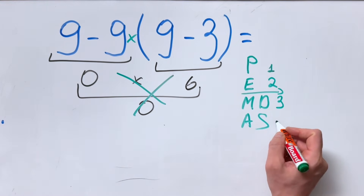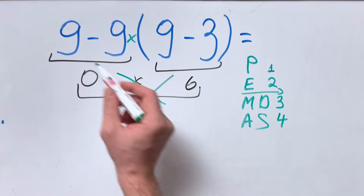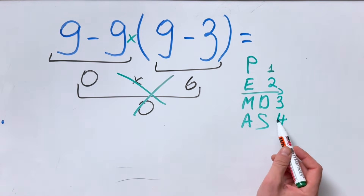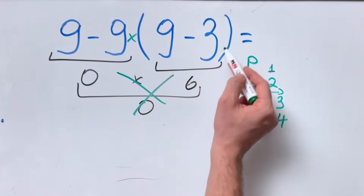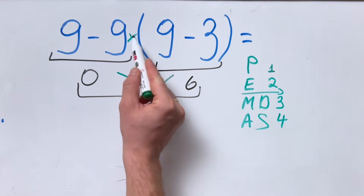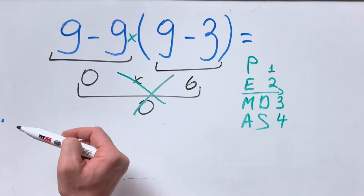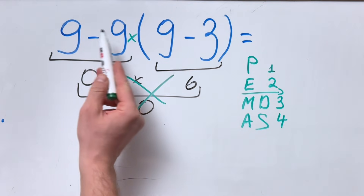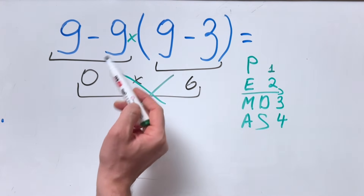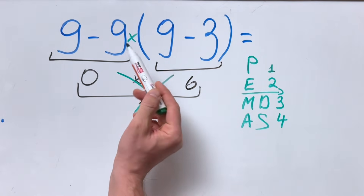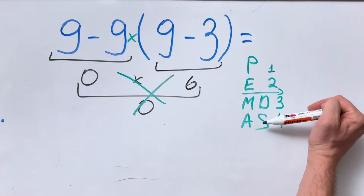And the last is addition and subtraction. Here we have subtraction, so we'll do it in the fourth place. So first we do parentheses, then multiplication, and then the subtraction. We should not do the subtraction first, then the parentheses, and then the multiplication just because it suits us. No — we must follow the correct order of operations.